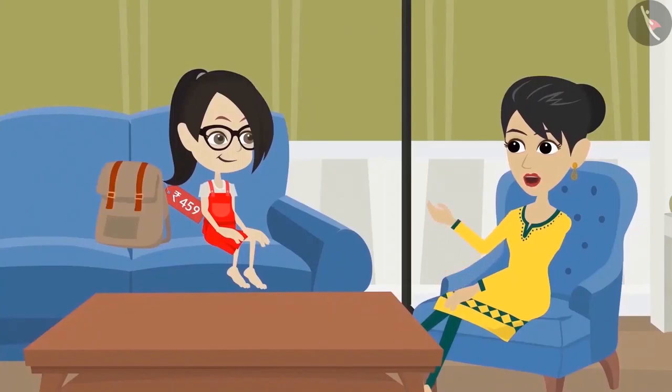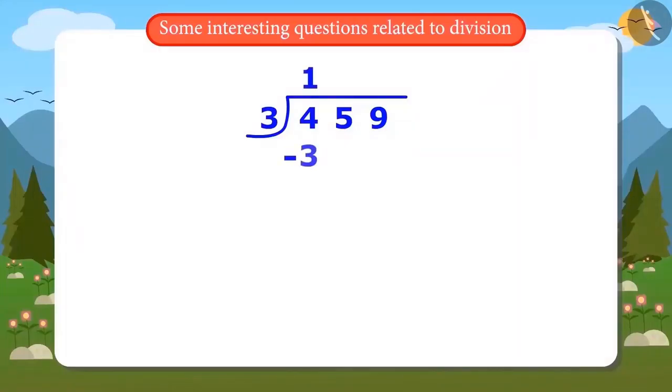Okay, now you divide. Okay, Mummy. So, if I divide 4 by 3, the answer is 1, and 1 is left. I have divided the first number. Now, what should I do now, Mummy?